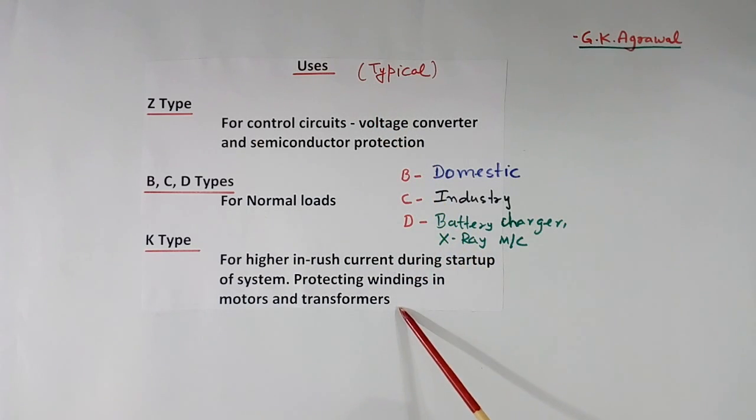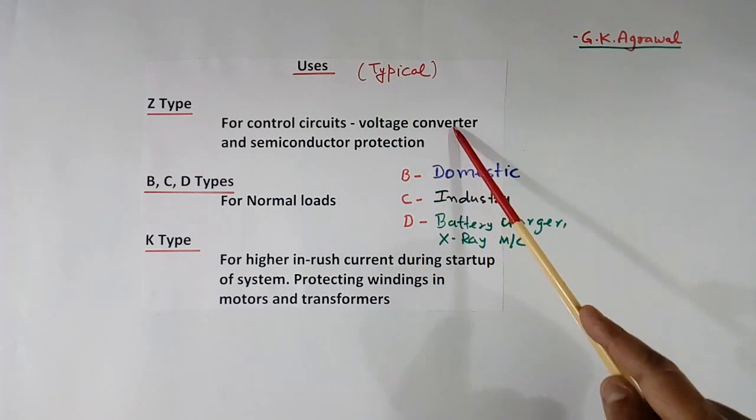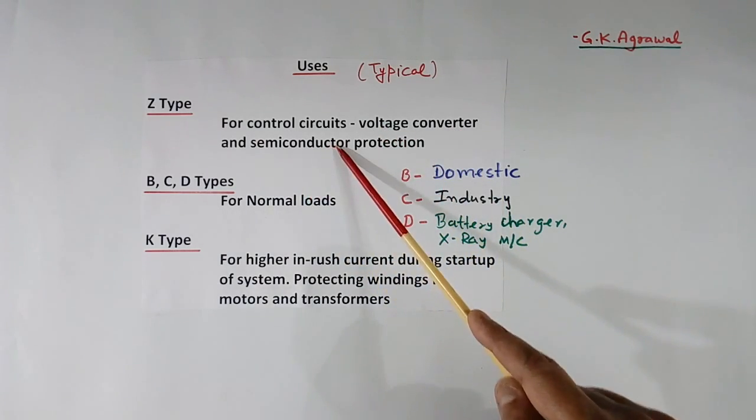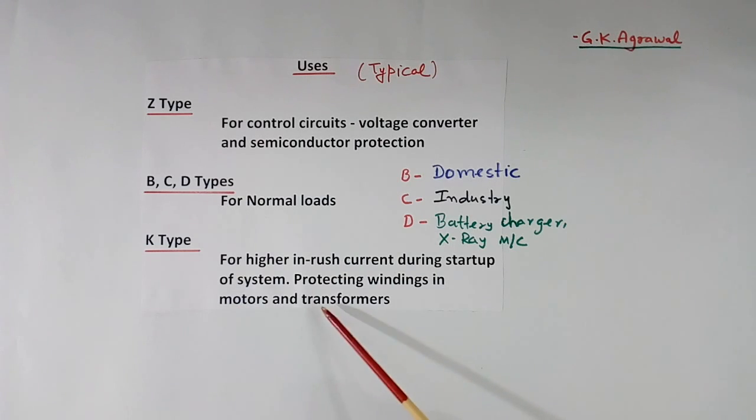These are typical. It can change also. For example in industry, all type loads may be there. Voltage converters are possible, semiconductors may be there, motors may be there, transformers may be there. So all types they may be using. Generally these MCBs are used for low voltage applications.